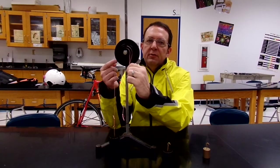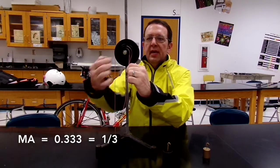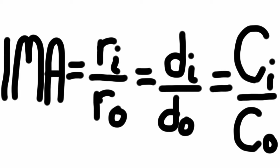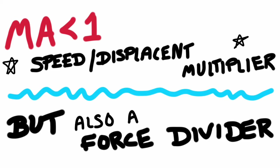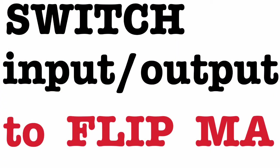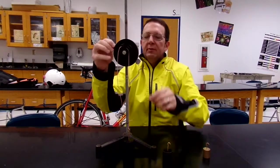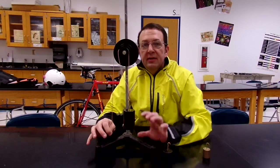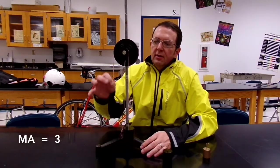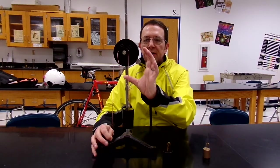This thing weighs 10 newtons. I have to apply about 30 newtons of force to get it moving, because the radius-to-radius — or diameter-to-diameter, or circumference-to-circumference — ratio is exactly the same thing, and you get a mechanical advantage less than one: a speed displacement multiplier that also divides force. That's about a 1-to-3 or 3-to-1 ratio. Just switch the input and the output to change from a speed displacement multiplier to a force multiplier. That ratio is still 1-to-3 or 3-to-1, and now I only have to apply about 3 and a third newtons — a little over 3 newtons — to get that thing moving.